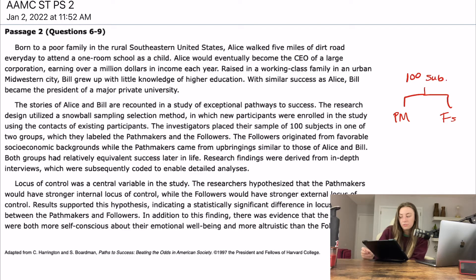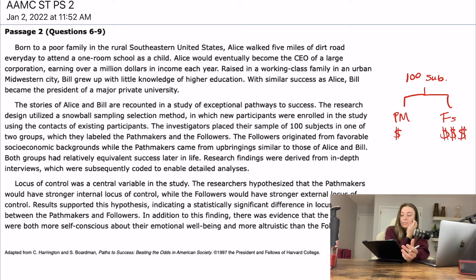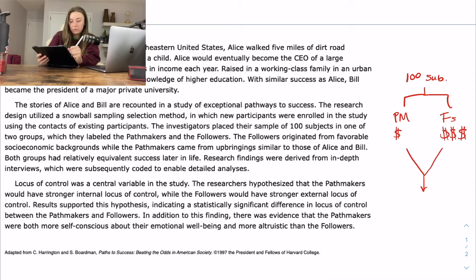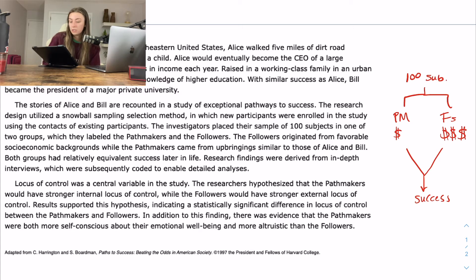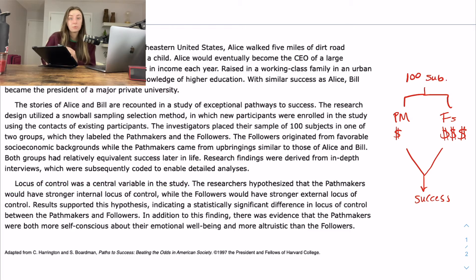The followers originated from favorable socioeconomic backgrounds, while the path makers came from upbringings similar to those of Alice and Bill. So path makers I'll give one dollar sign and followers three dollar signs — that just tells me their socioeconomic status growing up. Both groups had relatively equivalent success later in life. Research findings were derived from in-depth interviews, which were subsequently coded to enable detailed analyses. Locus of control was a central variable in the study.